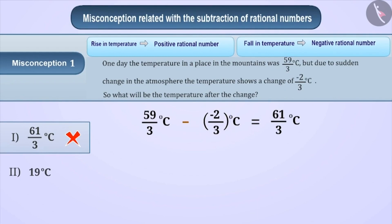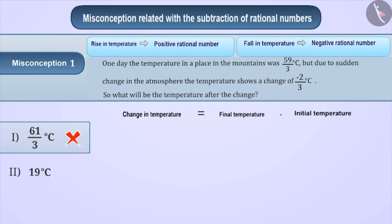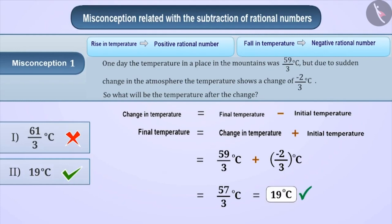Let's get the right answer. The change is given as a negative rational number, which means the temperature is declining. If the temperature is falling, the answer cannot be 61/3 because it is more than 59/3. The correct understanding is that temperature change equals final temperature minus initial temperature, so final temperature equals change in temperature plus initial temperature. Therefore we add: 59/3 plus minus 2/3 equals 57/3, which equals 19 degrees centigrade. That is, the correct answer is option 2.